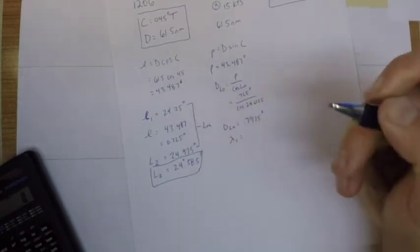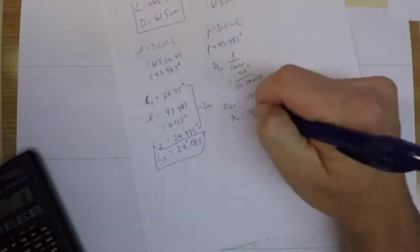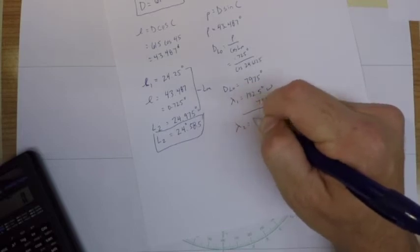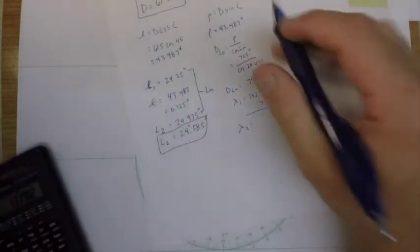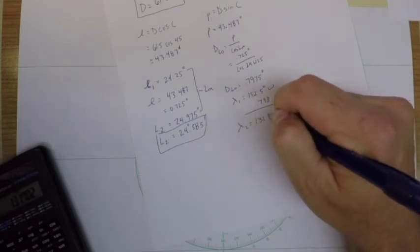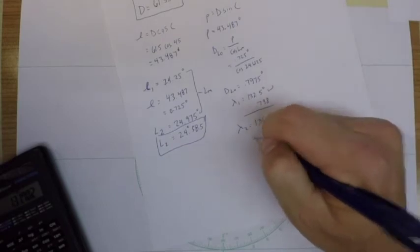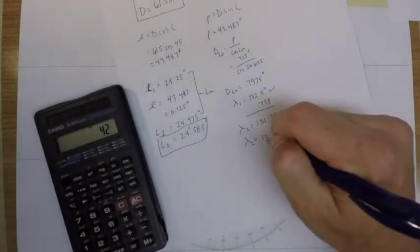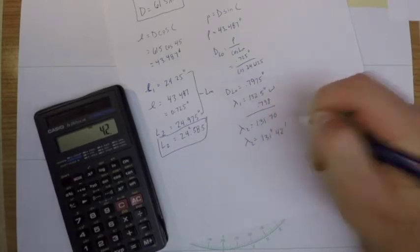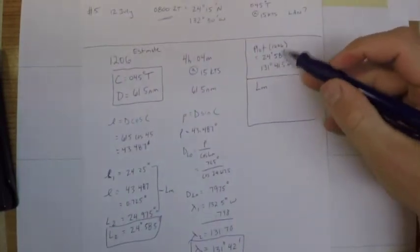And so if our first longitude was 132 and a half, our second longitude then would be—because we're traveling to the east, we need to subtract it—so it would be 131.70, or 131 degrees in 42 minutes.